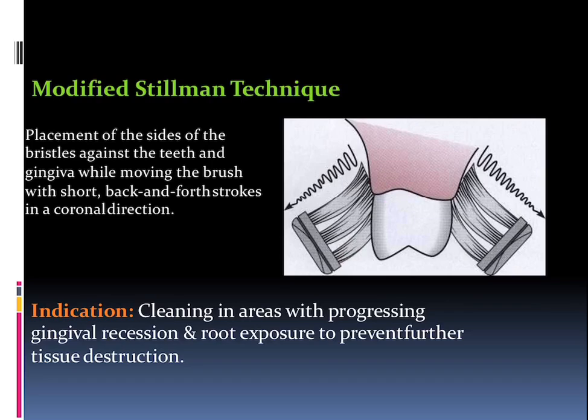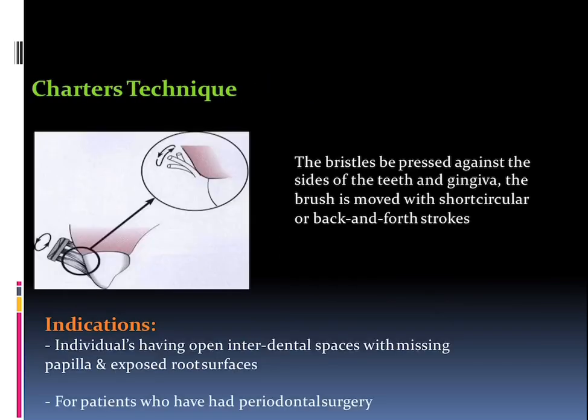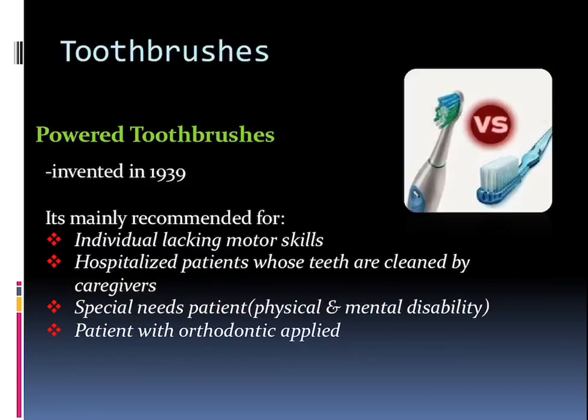Talking about the Charters technique: the bristles are pressed against the sides of the teeth and gingiva, and the brush is moved with short circular back-and-forth strokes. The indications are patients who have undergone periodontal surgery, or individuals who have an open interdental space with missing papilla and exposed root surfaces. Talking about advancements in toothbrushes, power toothbrushes were invented in 1939.